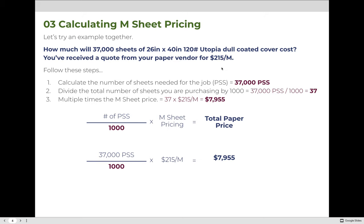Let's try an example. How much will 37,000 sheets of 26 by 40 inch, 120-pound Utopia dull coated cover cost? You've received a quote from your paper vendor that the paper is priced at $215 per M — that's the M-sheet price. Step one: calculate the total number of sheets needed. It's given to us — 37,000 sheets. Step two: divide by 1,000, giving us 37. Step three: multiply times the M-sheet price of $215. So 37 times 215 equals a total paper price of $7,955.